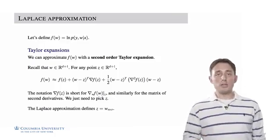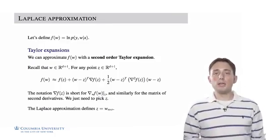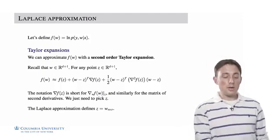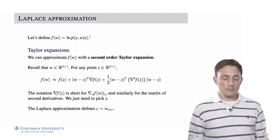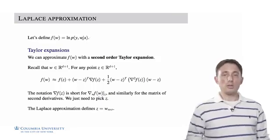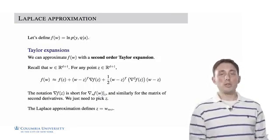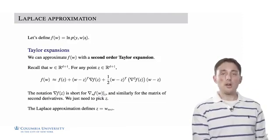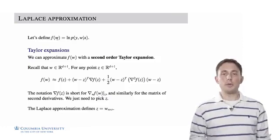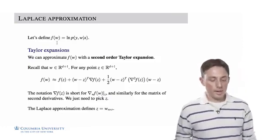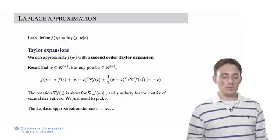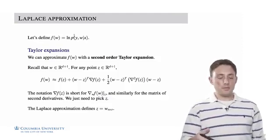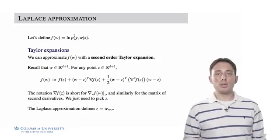There are many approximations we could use, but since we're discussing the Laplace approximation, we use a second-order Taylor approximation. We define this log joint likelihood as F — it's a function of the data and the unknown model variable W, which is the only free parameter. So F(W) is the log of the joint likelihood as a function of W. We then replace this function F with a second-order Taylor expansion of that function.